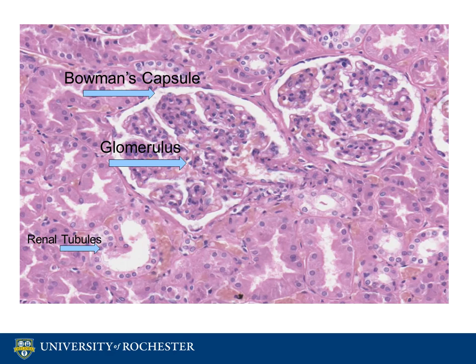The first part of the renal tubule that the filtrate passes through is the proximal convoluted tubule. This is located in the cortex of the kidney and is the longest part of the renal tubule. It is composed of simple cuboidal epithelium with a border of microvilli. Substances that the proximal convoluted tubule reabsorbs back into the blood include glucose, amino acids, water, sodium, potassium, phosphate, and chloride.